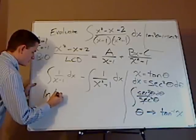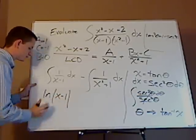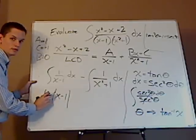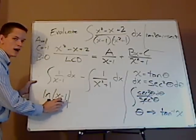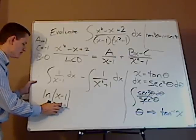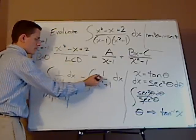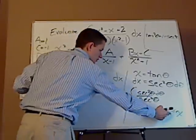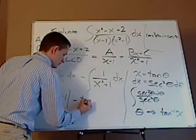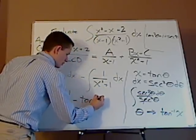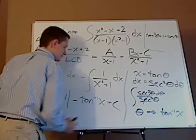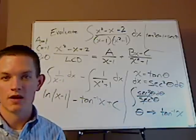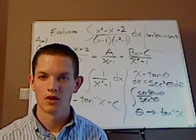So this is the natural log of the absolute value of x minus 1 because of the restrictions of natural log, logarithms. It has to be positive. So you want to put the absolute values around it. That's the reason for that. Now, also with this, minus, and then it's going to be arctan, or tan inverse, of x plus c, plus the constant. And you always need to put that when you're doing an indefinite integral.